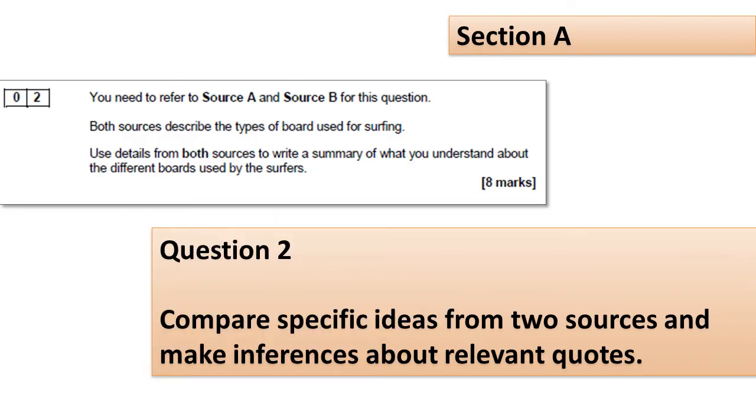Question 2 asks you to think about a very specific focus that's linked across two texts. For example, in this question 2 the focus is the different boards used by the surfers. You're required to write a summary of what you understand about that focus across source A and source B, so you're comparing a specific idea from those two sources. What you must do for this question, as well as comparing these ideas, is to support your ideas with textual details, so quotations, and make inferences about the quotes that you choose. Your teachers might have told you to use an SQI structure for your paragraphs, a statement quotation inference structure, and this will ensure that you cover all the elements of the mark scheme for question 2.